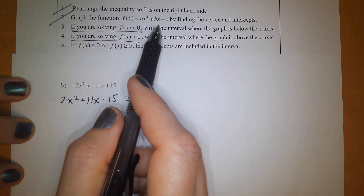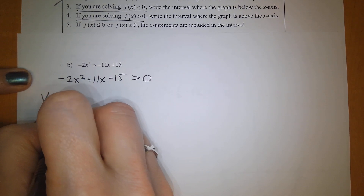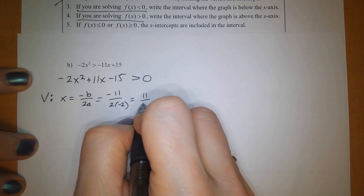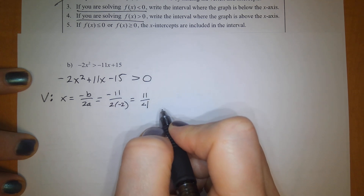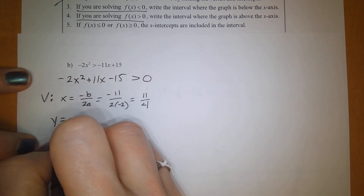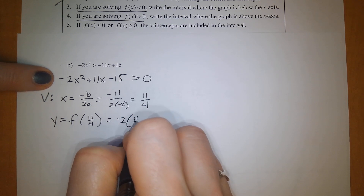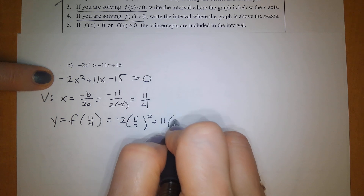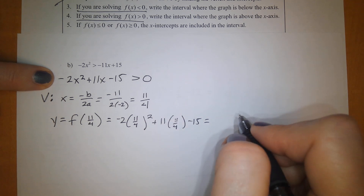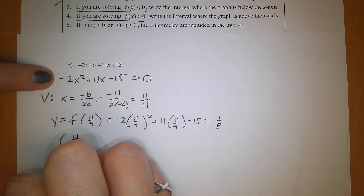Now we graph the function by finding the vertex and intercepts. The x-coordinate of the vertex is negative b over 2a: negative 11 over 2 times negative 2, which gives positive 11 fourths. For the y-coordinate, we plug 11/4 into the function: negative 2 times (11/4) squared plus 11 times (11/4) minus 15. Plugging that into the calculator gives 1 eighth. So the vertex is at (11/4, 1/8).